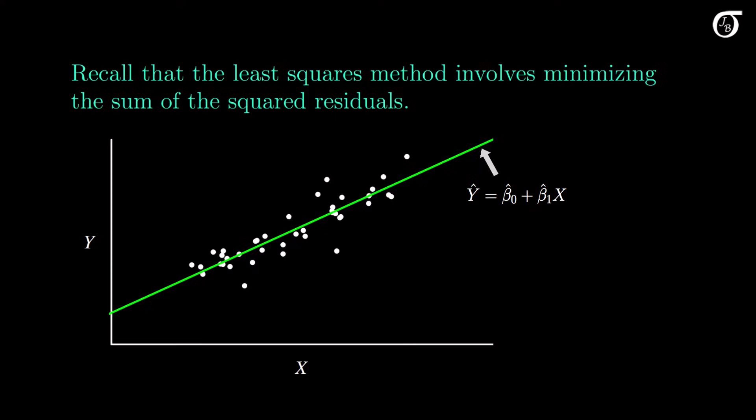This line yields the predicted value of y for any given x. The residuals are the differences between the observed values of y and their predicted value based on the regression line. This value of y would have a positive residual that's equal to the vertical distance from the point to the line. This value of y would have a negative residual where the magnitude is equal to the vertical distance from the point to the line.